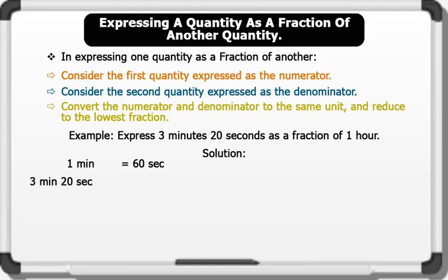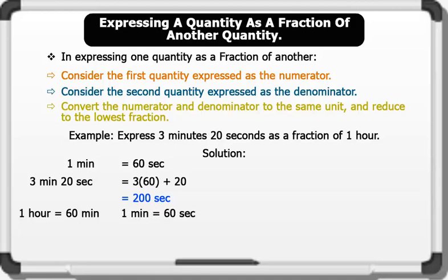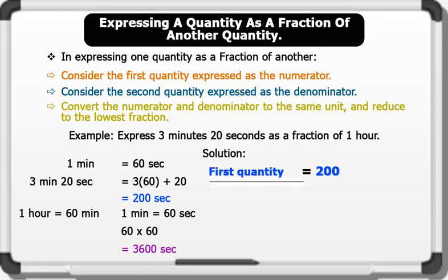Solution: 1 minute equals 60 seconds, therefore 3 minutes 20 seconds equals 3 × 60 + 20 = 200 seconds. Note that 1 hour equals 60 minutes, and 1 minute equals 60 seconds, so 1 hour equals 60 × 60 = 3600 seconds. Therefore the fraction is 200 seconds over 3600 seconds. Reducing to the lowest term by dividing through by 200 equals 1 over 18.